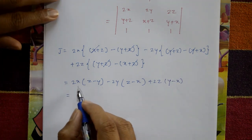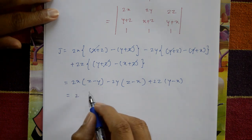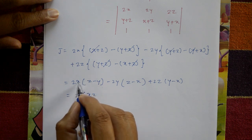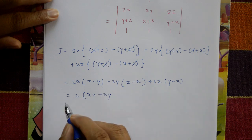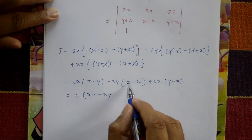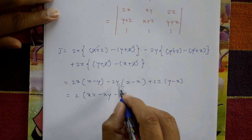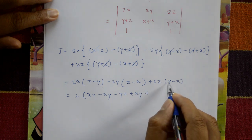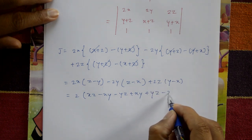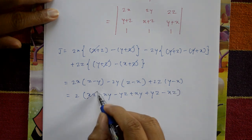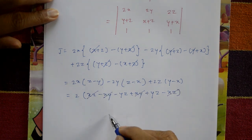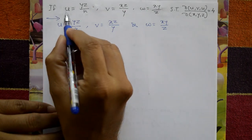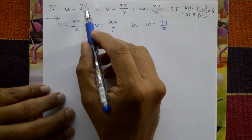Minus 2y(z minus x) plus 2z(y minus x). Taking 2 as common: 2[x(z−y) − y(z−x) + z(y−x)]. Expanding: xz − xy − yz + xy + yz − xz. All terms cancel, so J = 0. This is the required answer.